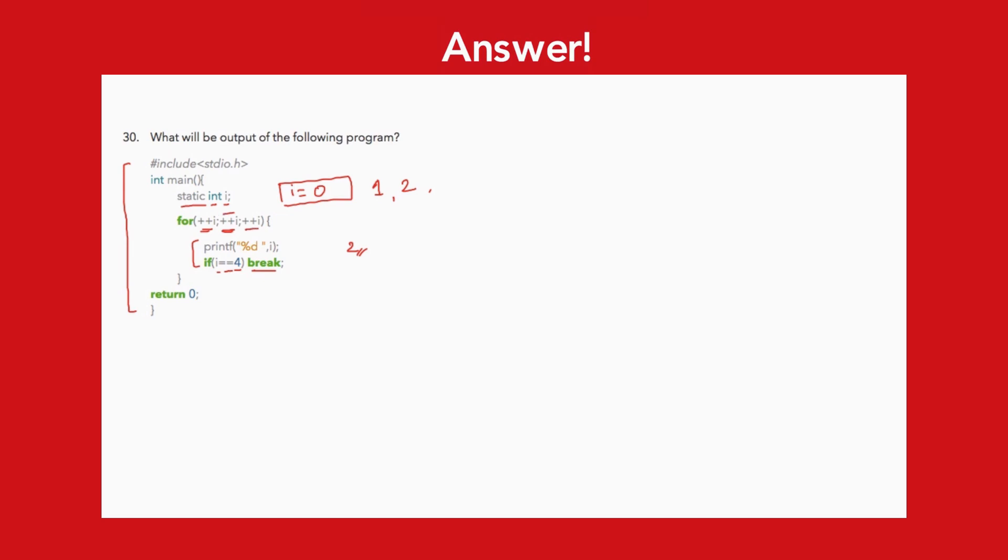And again the condition will be checked. Because we have plus plus i here, the incremented value of i, that will be 4, will be checked. Now 4 is a non-zero number, again the condition is true. i has become 4 here before checking the condition.